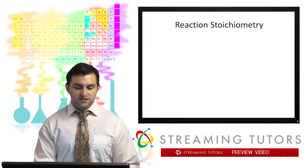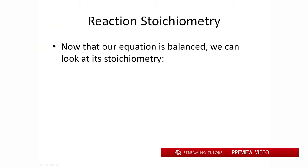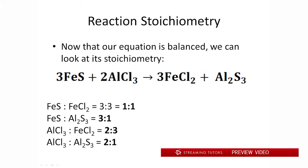Okay. Now that we're done with that, we're going to progress into reaction stoichiometry. So with our balanced reaction from problem 1, we can notice a few things, particularly about the ratios of our compounds that we're using. So we have a 3 to 3 ratio of iron sulfide to iron chloride. That just goes down to 1 to 1. We have 3 to 1 ratio of iron sulfide to aluminum sulfide. We have a 2 to 3 ratio of aluminum chloride to iron chloride. And we have a 2 to 1 ratio of aluminum chloride to aluminum sulfate.